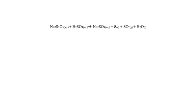When sodium thiosulfate reacts with sulfuric acid, the products are sodium sulfate — a salt — sulfur, a solid, sulfur dioxide, a gas, and water. The sulfur that is formed accumulates as a white precipitate in the mixture, resulting in the X on which the container sits becoming obscured. As such, the cross appears to disappear.